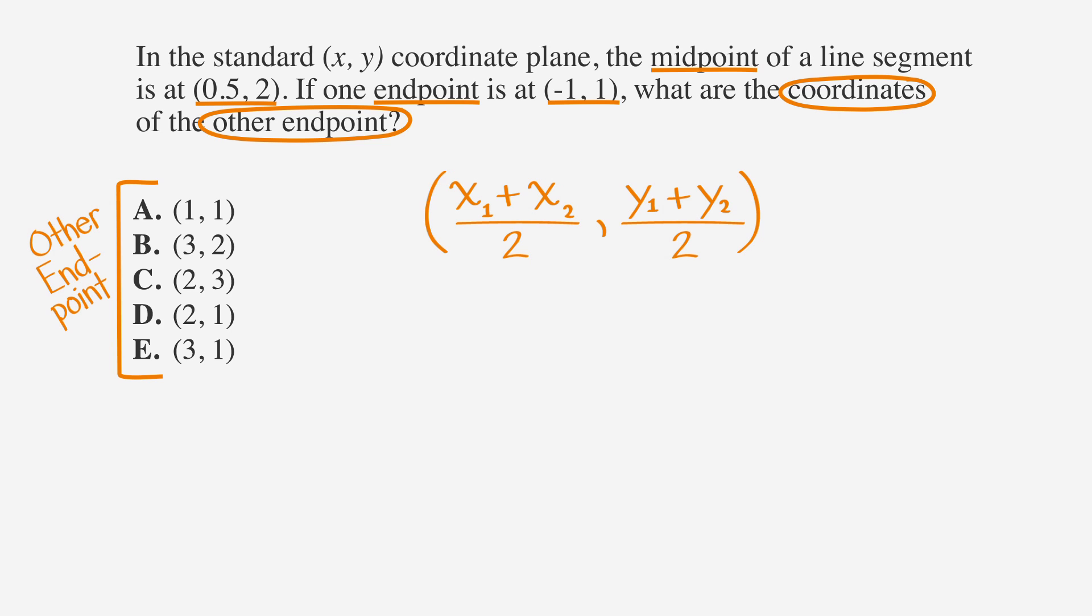Instead of our normal midpoint formula, let's say that we have two equations, and that midpoint x equals x1 plus x2 over two, and midpoint y equals y1 plus y2 over two. If we plug in point five for midpoint x, and negative one for x1, the first equation becomes point five equals negative one plus x2 over two.